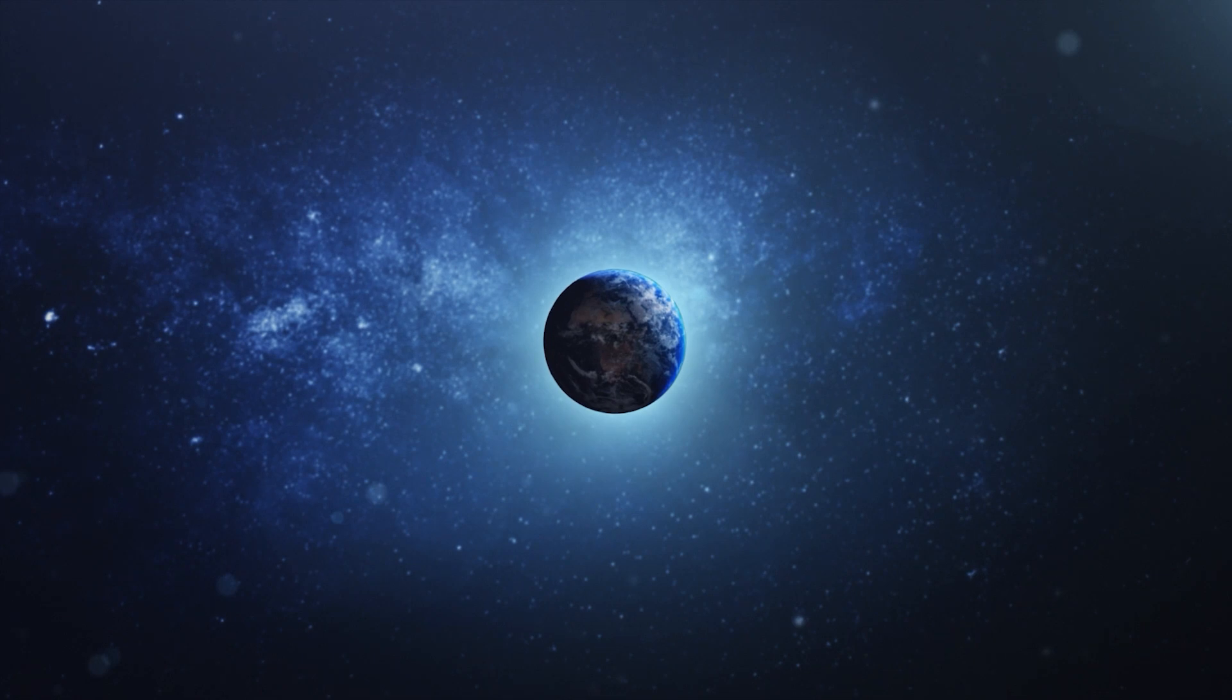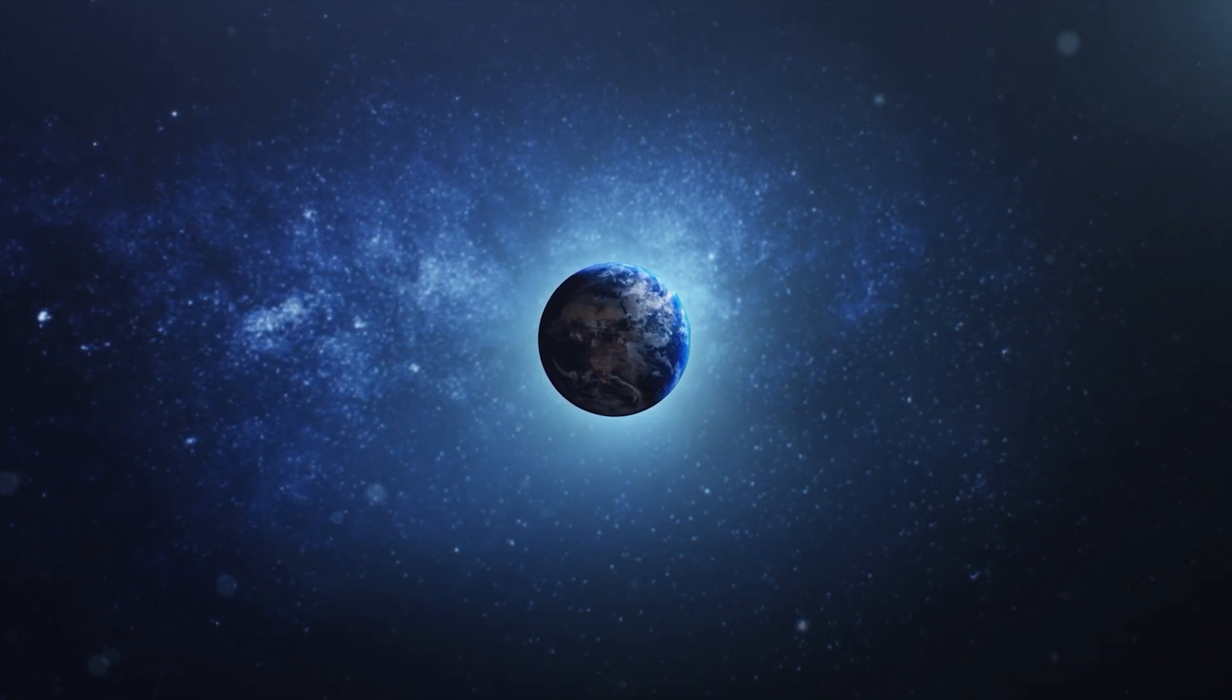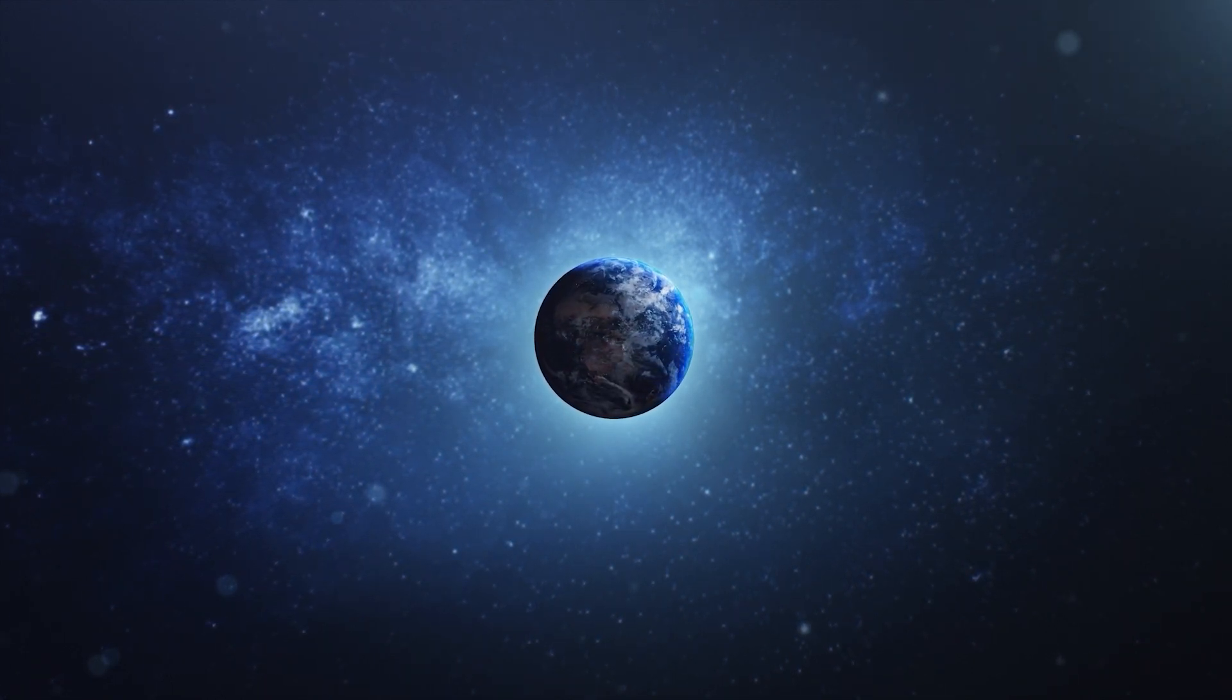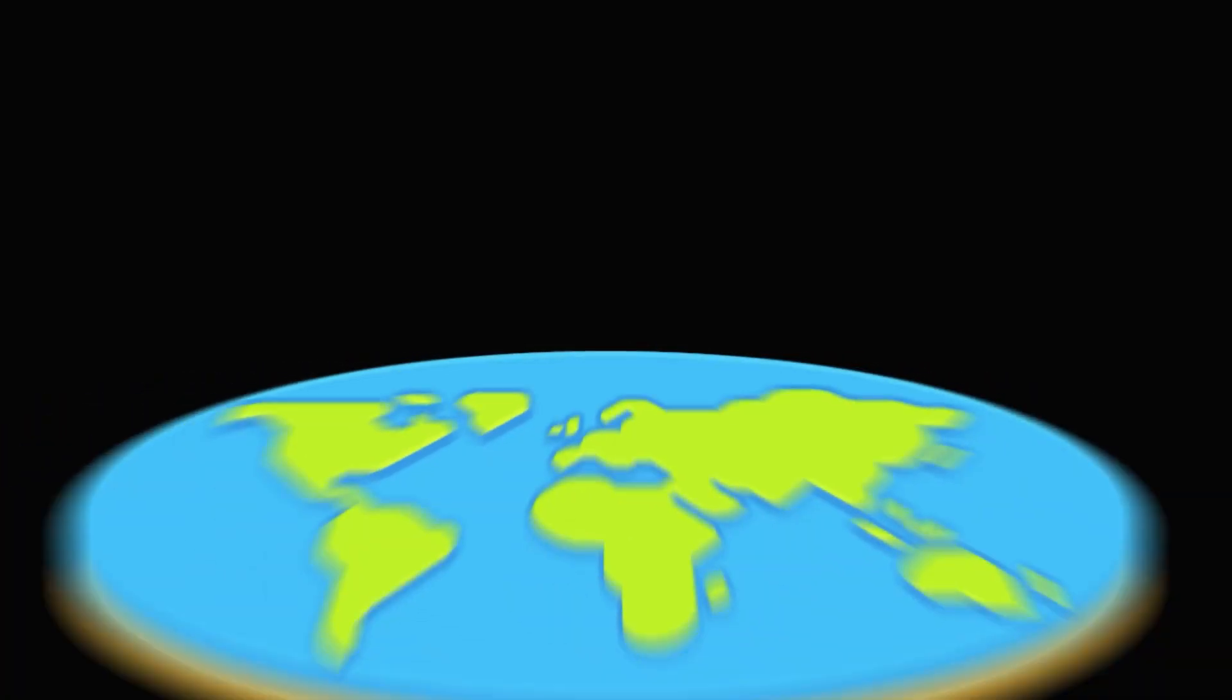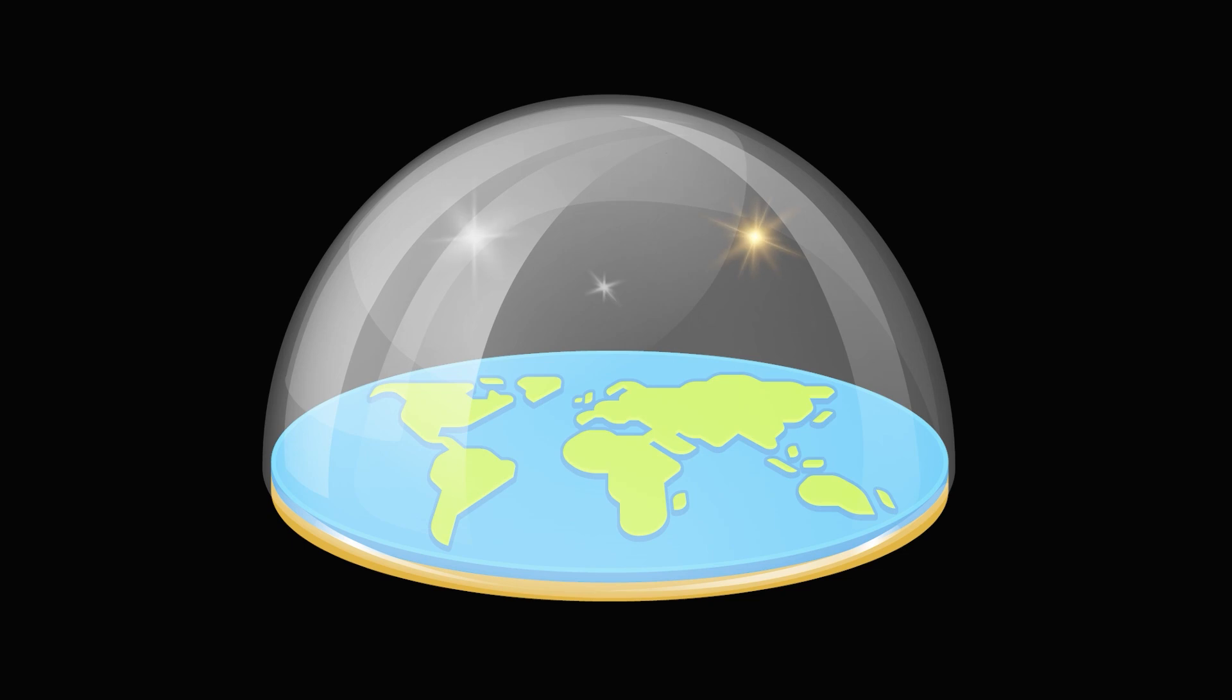Astronomers have been trying to understand our place in the universe since prehistoric times. Early on, they had tons of theories. Some believed that the Earth was a disk and the sky was a dome with all the stars on it.